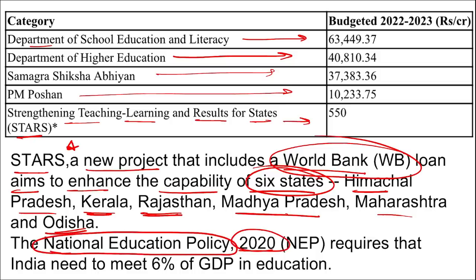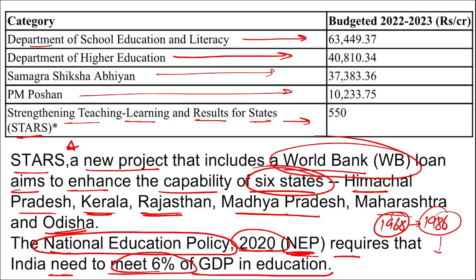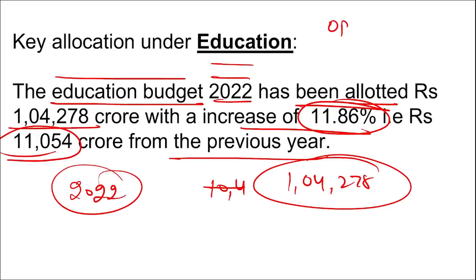The National Education Policy (NEP) 2020 requires India to spend 6% of GDP on education. The first NEP was released in 1968, then in 1986 (edited in 1992), and most recently in 2020. Operation Blackboard came in the year 2001.